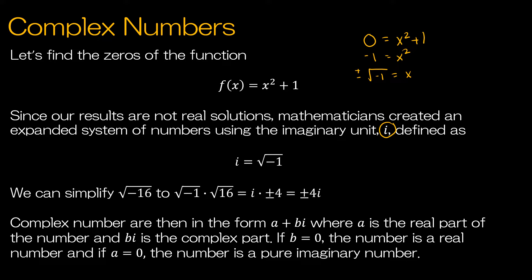i is defined as the square root of negative 1. Now, the entire system of numbers — just so we can keep straight our Venn diagrams — if I had a Venn diagram of the complex numbers, complex numbers are in the form a plus bi, and together they create a complex number. Complex numbers can be considered all of the numbers that we deal with.